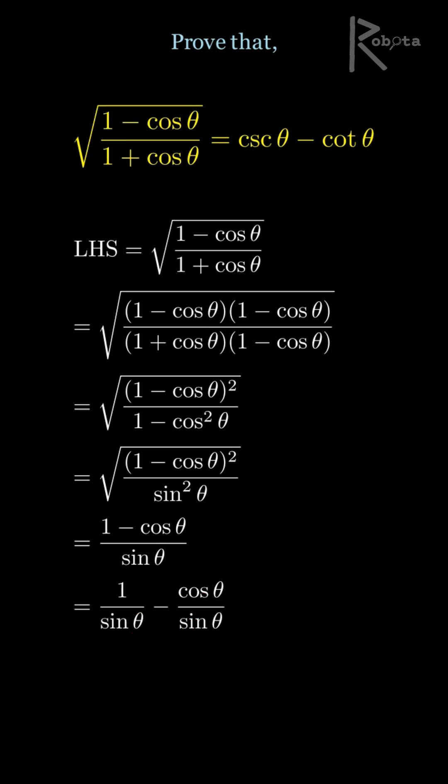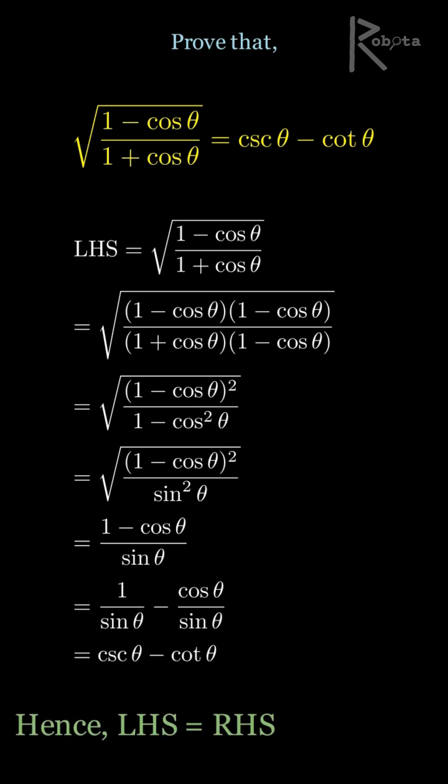So finally, we have cosec theta minus cot theta, which is the right-hand side of the equation. Hence, the identity is proved.